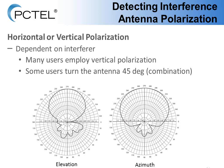You also have to decide how to position your antenna when hunting interference: horizontal or vertical polarization. Looking at the elevation and azimuth plots, vertical polarization provides much better directionality. Since most interferers are ubiquitous and radiate in any direction, most users employ vertical polarization. However, some users turn their antenna 45 degrees to get a combination of directionality between elevation and azimuth.